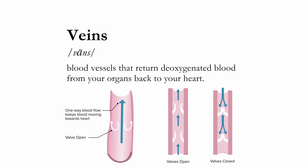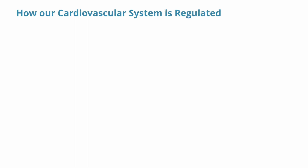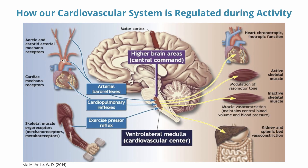Now that we've reviewed how blood is distributed throughout the body, I will speak more specifically to how our cardiovascular system is regulated during activity. There are a couple of neural mechanisms that help regulate this system. Neural mechanisms relate to our nerves and nervous system — essentially how the body transmits signals between different areas of the body during exercise.